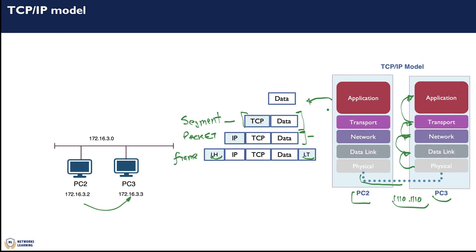To recap: from the application going downwards, you start encapsulating your TCP or transport header, your IP header for the packet, and your link header and link trailer for the frame. This is then put onto the physical layer as bits. Hitting PC3, the opposite operation takes place — you start decapsulating from data link to network to transport to application. The key information here is what goes into this link header.